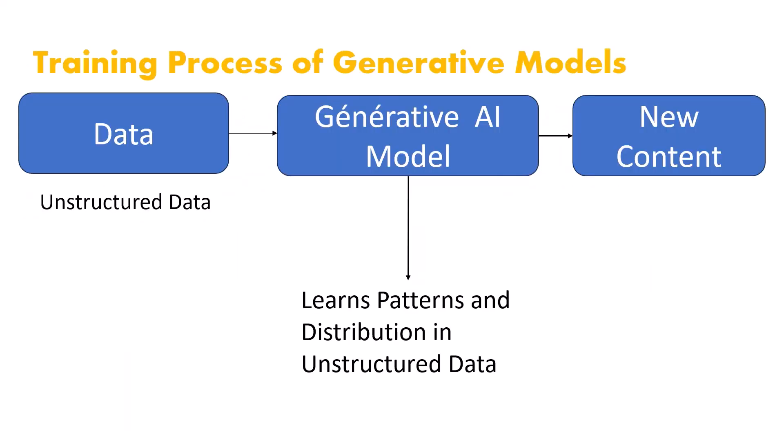Here we have the training process of generative models. First we have the data — since generative models are trained on huge amounts of data, we don't have labeled data, so we use unstructured or unlabeled data. We pass this data to generative AI models, which learn patterns and distributions and generate new data. In generative AI, the main purpose is to make accuracy better, so human supervision is required, and reinforcement learning through human feedback is applied. The next video will cover how ChatGPT is trained and RLHF in more detail.